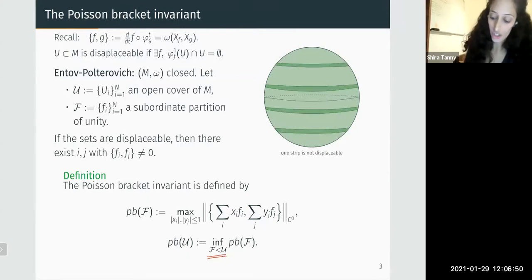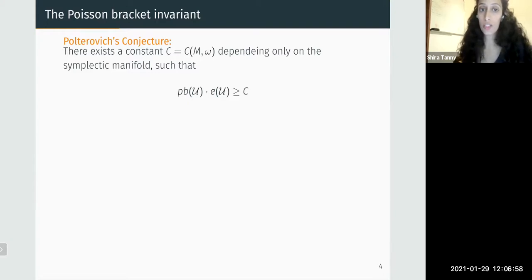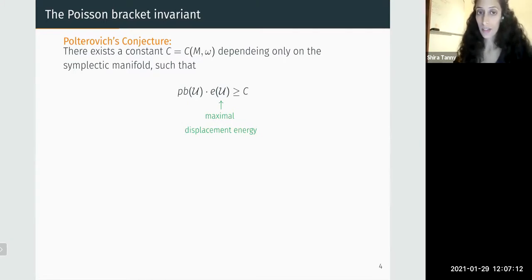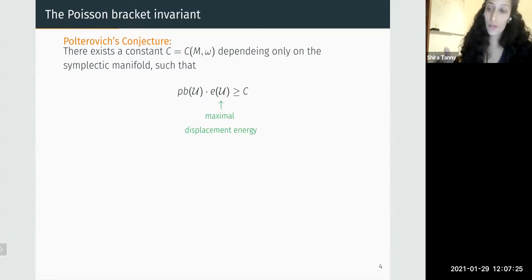Polterovich also conjectured a lower bound for this invariant. The conjecture states that there exists a constant depending only on the symplectic manifold — crucially not on the cover — such that the product of the Poisson bracket invariant and the maximal displacement energy of a set from the cover is bounded below by this constant. This inequality is interpreted as an uncertainty principle: when the cover consists of very small, highly localized sets, the Poisson bracket invariant (representing certain noise) should be very large.